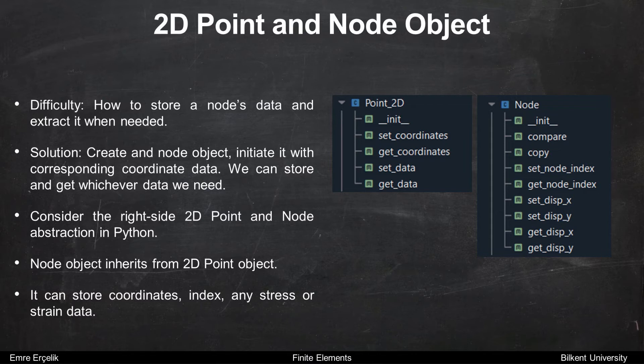Consider the right side 2D point and node abstraction in python. Node object inherits from 2D point object. It can store coordinates, index, and stress or strain data.